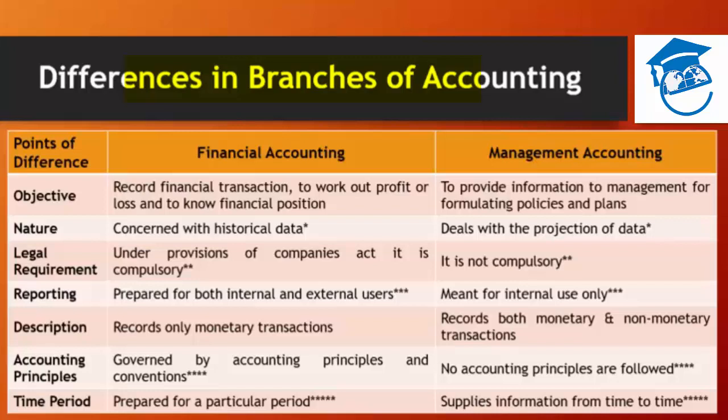The objective of management accounting is providing information to management for formulating policies and plans. The second point of distinction is nature: financial accounting records only those transactions which have already taken place, while management accounting is concerned with using historical data to make projections or take future managerial decisions. Management accounting takes the data already recorded by financial accounting and reorients it to facilitate projections for future managerial decisions.